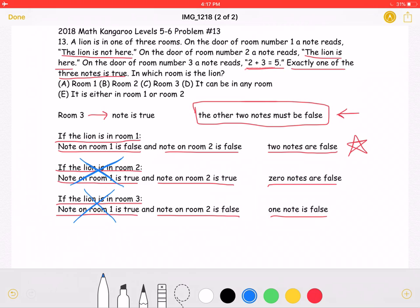The only room the lion could be in, so that two notes are false, is over here in room 1. Which means that answer choice A must be correct. The lion is in room 1.